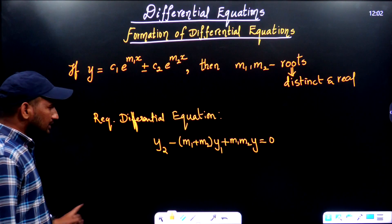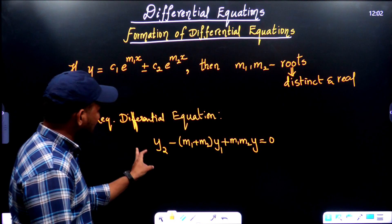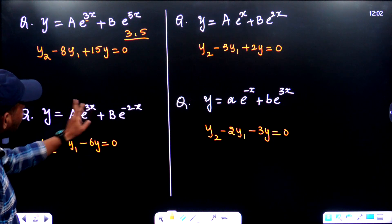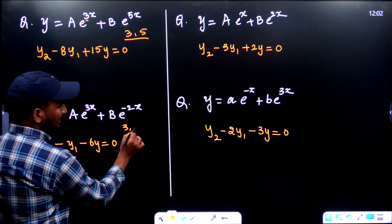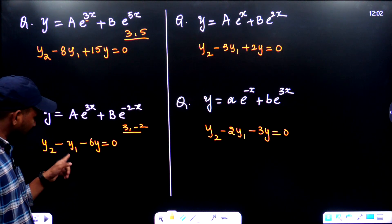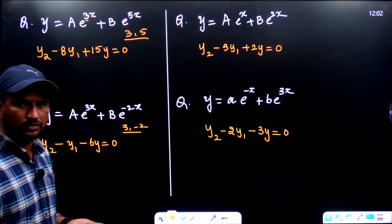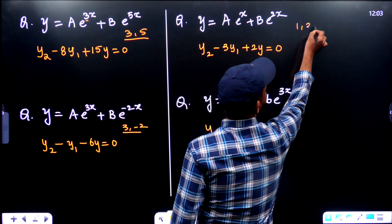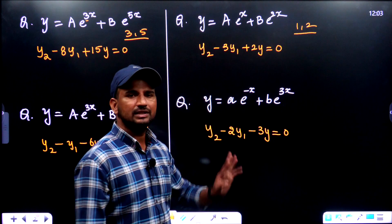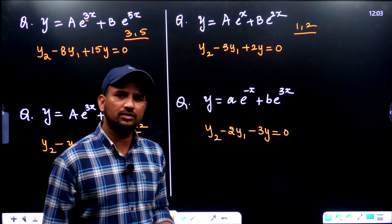The formula is: y2 - (m1 + m2)·y1 + m1·m2·y = 0. Here the roots are 3 and -2. Summation of roots: 3 + (-2) = 1, that's why -1·y1. Product: 3 × (-2) = -6, that's why -6y = 0. For the next question, roots are 1 and 2. Summation: 1 + 2 = 3, so middle term is -3y1. Product: 1 × 2 = 2, so last term is +2y = 0.